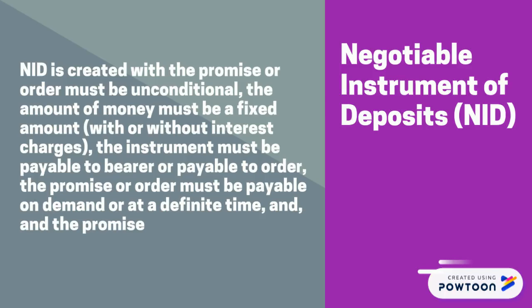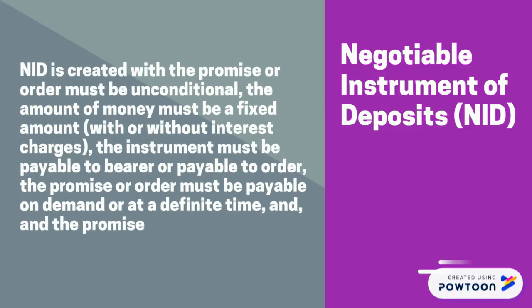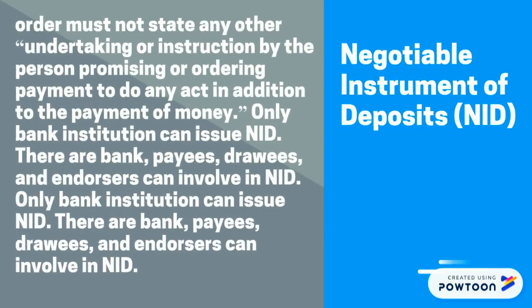The promise or order must be payable on demand or at a definite time, and the promise or order must not state any other undertaking or instruction by the person promising or ordering payment to do any act in addition to the payment of money. Only bank institutions can issue NID. The parties involved are the bank, payees, drawees, and endorsers.